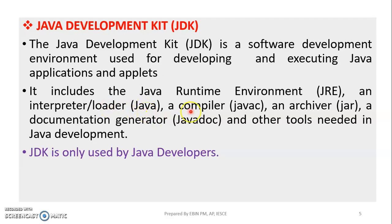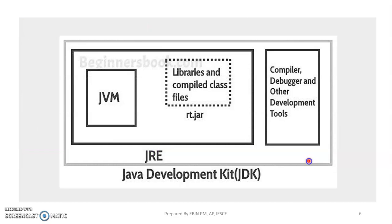If you download the JDK, you get a JRE, an interpreter, a loader, a Java compiler (javac), a javadoc tool, and additional tools. There are additional tools available in the Java Development Kit including a compiler and a debugger.